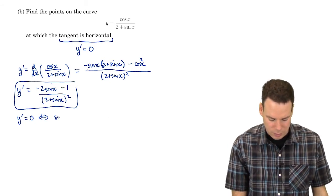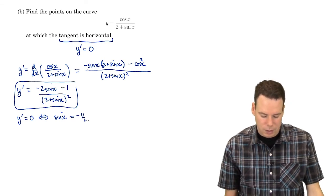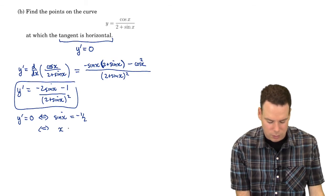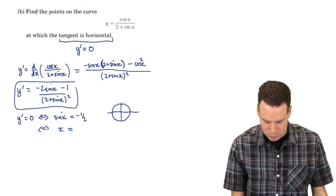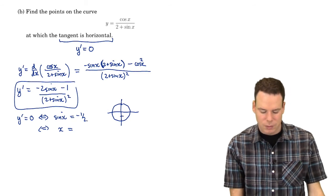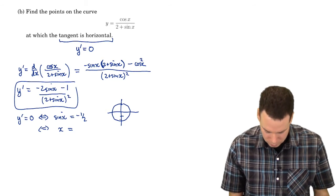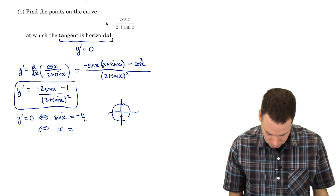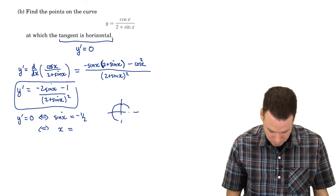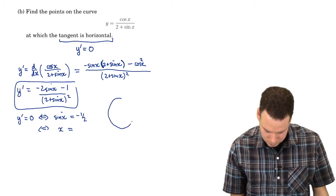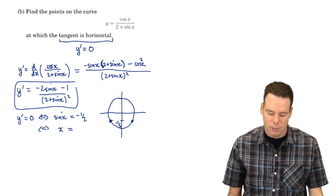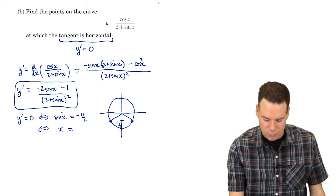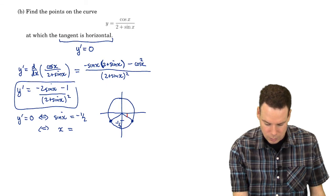So we just need the numerator to be 0. Where is the numerator 0? That's when sine of x equals negative 1/2. So when is sine of x equal to negative 1/2? This is where a unit circle diagram comes in handy. Sine of x is the y-coordinate of a point on the unit circle, so we're looking for y equal to negative 1/2. There are two points on the unit circle whose y-coordinate is negative 1/2, giving us two corresponding angles.